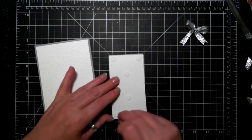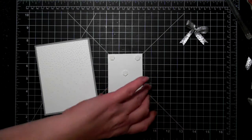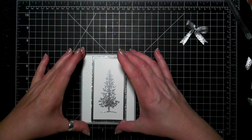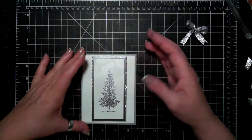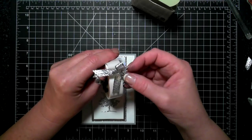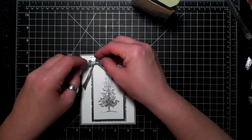Then I'm going to put the glimmer paper directly onto the embossed piece, and then a little tiny bow on top of that with glue dots.